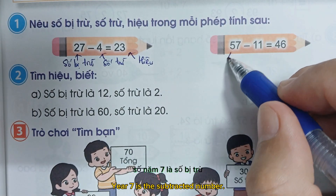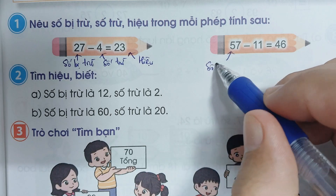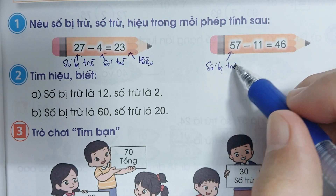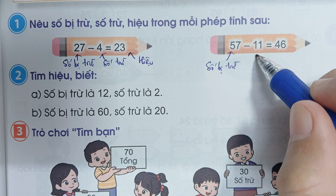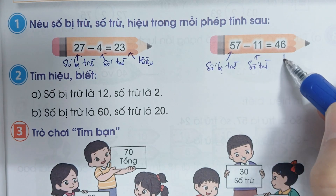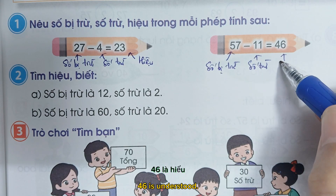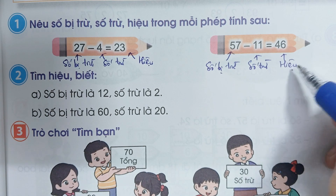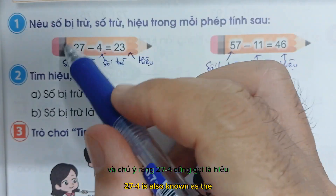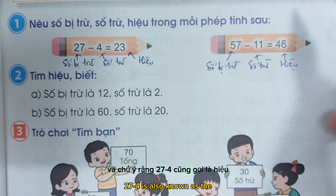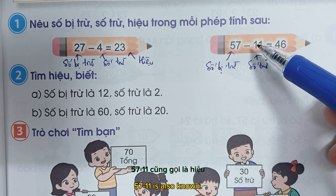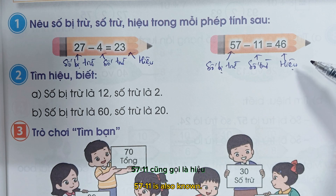Số 57 là số bị trừ. Số 11 là số trừ. 46 là hiệu. Và chú ý là 27 trừ 4 cũng gọi là hiệu. 57 trừ 11 cũng gọi là hiệu.